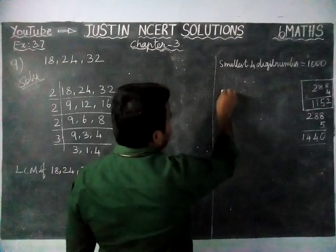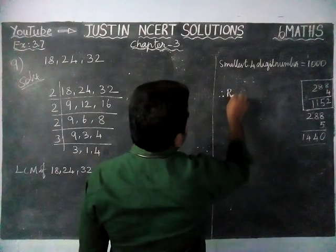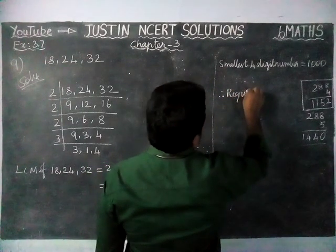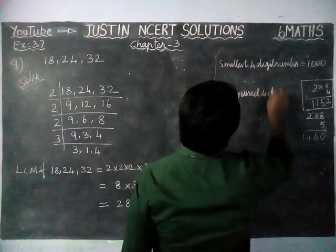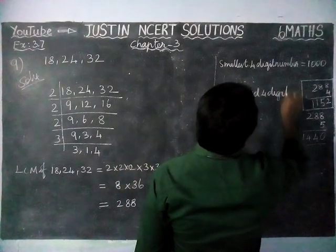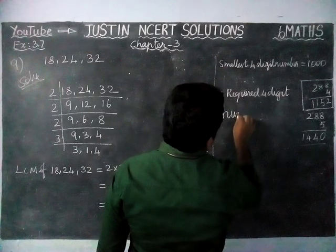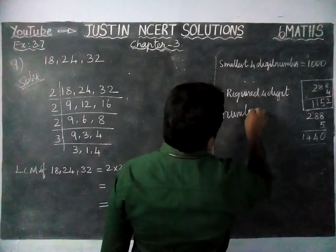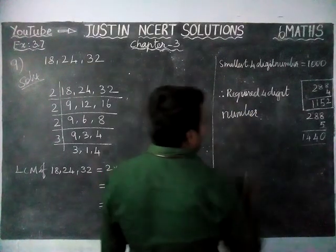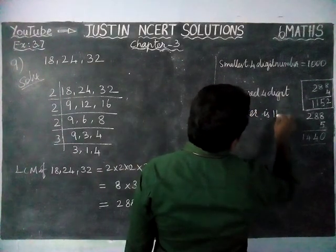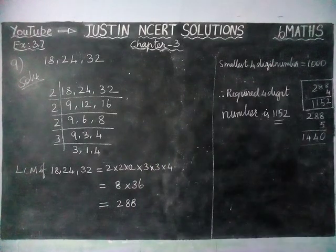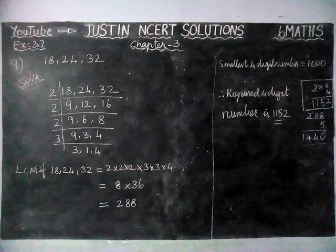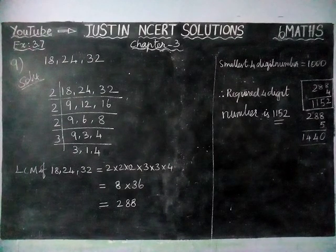Therefore the required smallest 4-digit number divisible by 18, 24 and 32 is 1152. That's all students. Kindly give your suggestions in the comments box, share this video with your friends, and subscribe to our channel. Thank you.